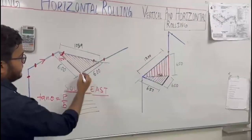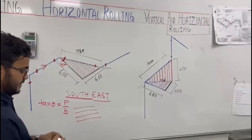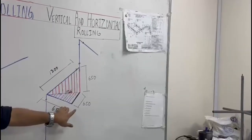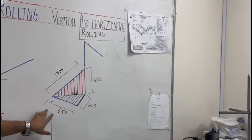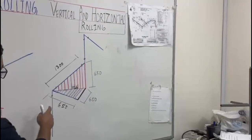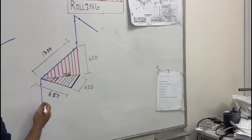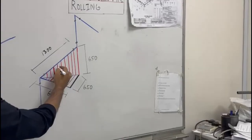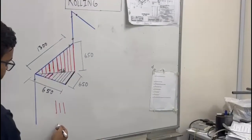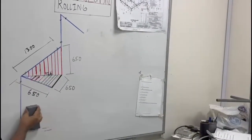So where it is rolling — south to east — understand. This is called horizontal rolling. Now we have vertical and horizontal rolling together. This lining is for horizontal rolling and this is for vertical rolling — vertical rolling like this, horizontal rolling like this.